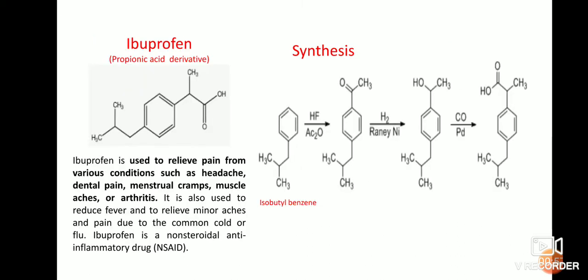The next one is ibuprofen. This drug is mainly used to relieve pain from various conditions such as headaches, dental pain, menstrual cramps, muscle aches, and arthritis. This drug comes under propionic acid derivatives.